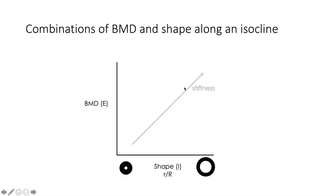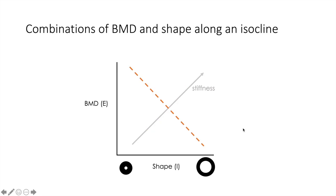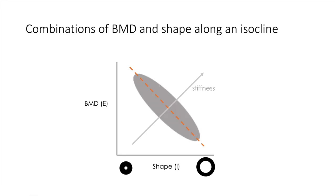We now know that stiffness increases with bone mineral density, which is a measure of E, and also with a shape index, which is a measure of I. We can draw lines in a plot where each line represents a single value of stiffness — this is called a performance isocline. The same value of stiffness can be obtained by different combinations of BMD and shape along this isocline. In the case of many-to-one mapping, we expect an optimum stiffness value that can be obtained by different combinations of these two traits, with different species falling somewhere along this line.